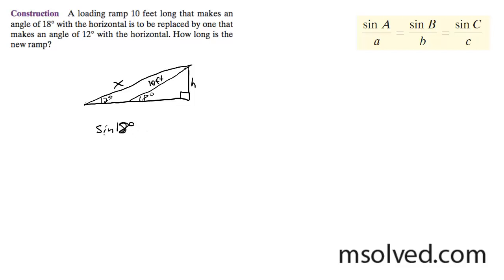All right, so sine of 18 degrees over H is equal to sine of 90 over 10 feet. So cross-multiply. Sine of 90 times H. Sine of 90 is just 1, so it's H. It's equal to sine of 18 degrees times 10 feet. And with that, we get—rounds to 3.09 feet. And that's what our new H is.